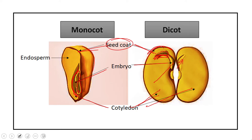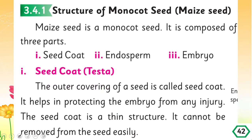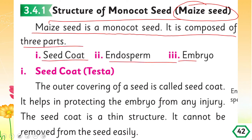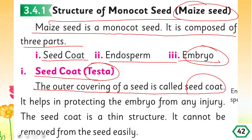Mono means one and di means two. The structure of a monocot seed: maize seed — the grain of corn — is a monocot seed. The maize seed is composed of three parts: seed coat, endosperm, and embryo. The seed coat is also called testa. The outer covering of a seed is called the seed coat and it helps in protecting the embryo from any injury.